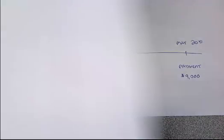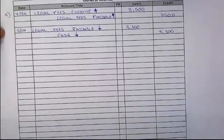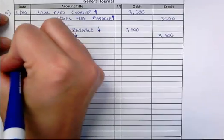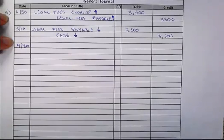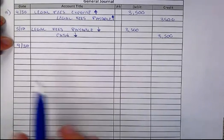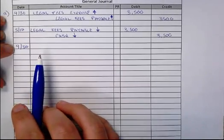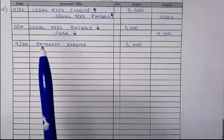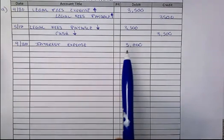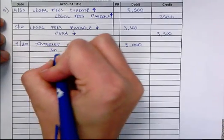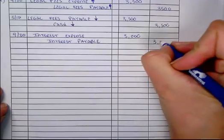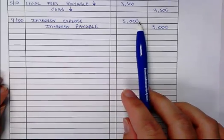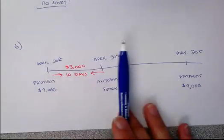Our entry is very similar to the one we just did for situation A. On the 30th, we need to make sure we have the adjusting entry to record all the expense that's been incurred but not yet paid. We want to record an expense but a promise to pay later. In this case, we will use interest expense — $3,000 of interest expense accrued, and the promise to pay that amount later. So the expense for $3,000 for the interest for those 10 days has been recorded, and the payable — the promise to pay later — has been recorded also, as of April 30th.